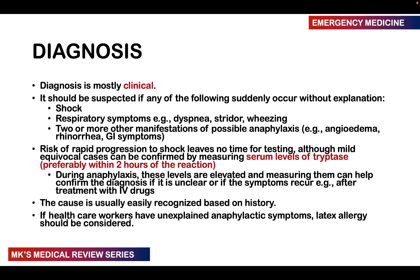Anaphylaxis should be suspected if a patient presents without explanation with shock, respiratory symptoms like dyspnea, stridor, or wheezing, or two or more other manifestations associated with anaphylaxis such as angioedema, rhinorrhea, or GI symptoms. Of course, they may also give a history of being stung by a bee or exposed to a food allergy when brought to the emergency department.